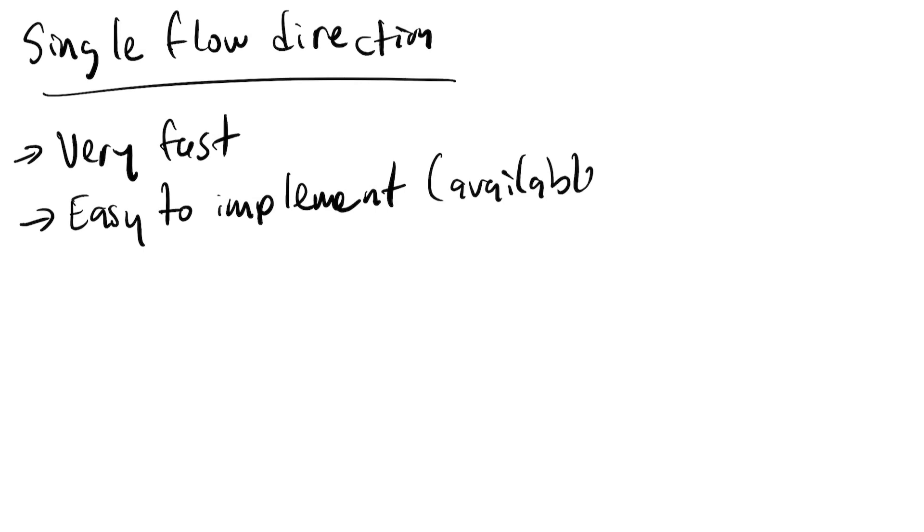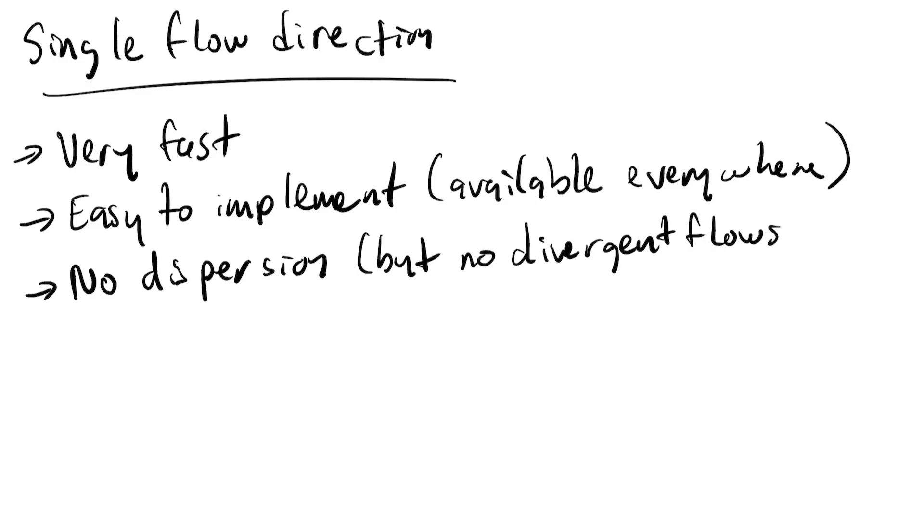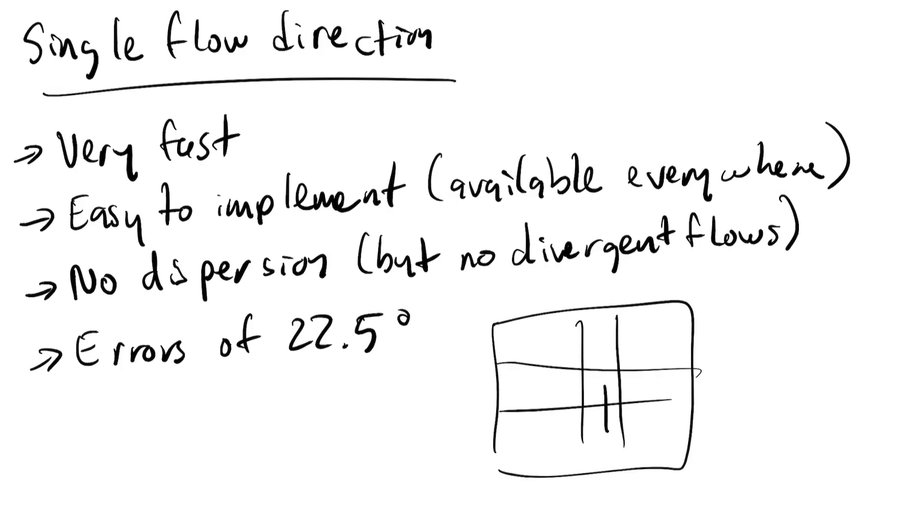Summarizing some of the pros and cons of the single flow direction method: it's very simple to do all the required calculations, and so it's also very fast. It's easy to implement, which in practice means that it's available everywhere. It doesn't disperse the flow of water, which is good because water flows tend to converge in reality, but it also doesn't support divergent flows, which do exist. For instance, think of river deltas. And the method comes with errors of up to 22.5 degrees, which are caused by having to choose a neighbor in increments of 45 degrees.